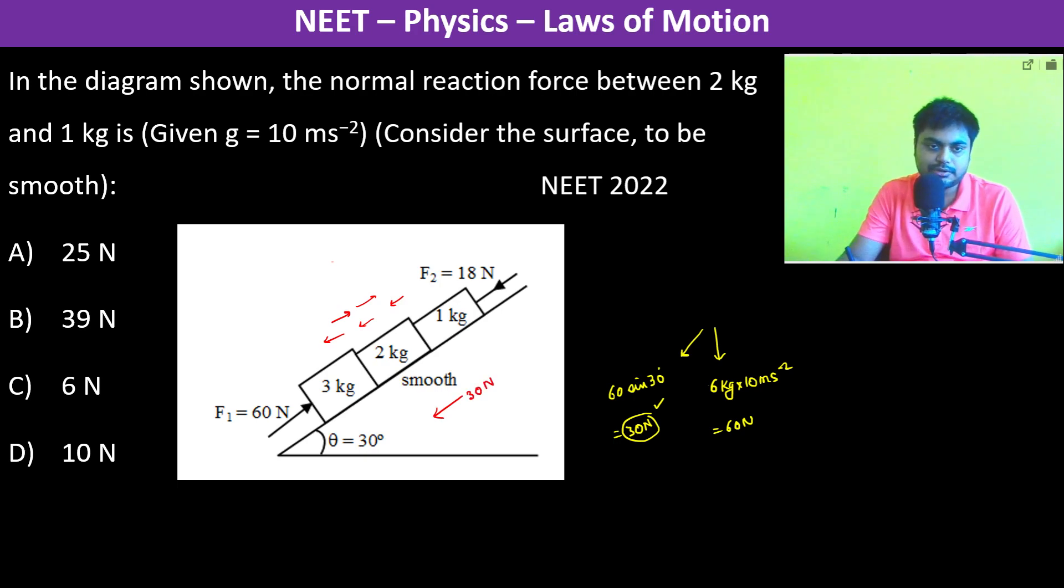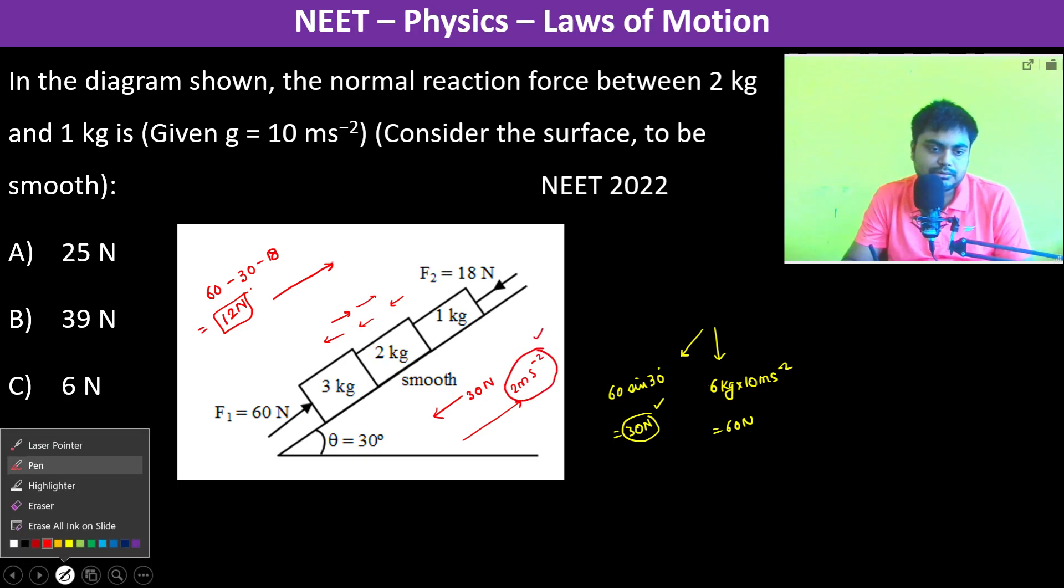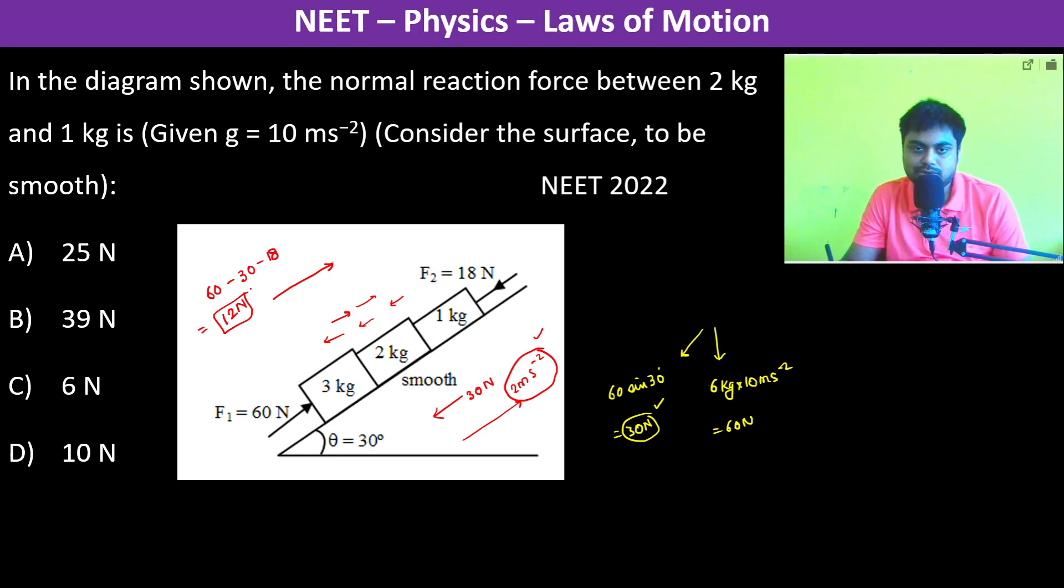Therefore, the net force is going to be in this direction: 60 minus 30 minus 18, which is 48, so this is 12 newtons. Since this is 12 newtons, therefore combinedly they will be moving with an acceleration of 2 meter per second square.